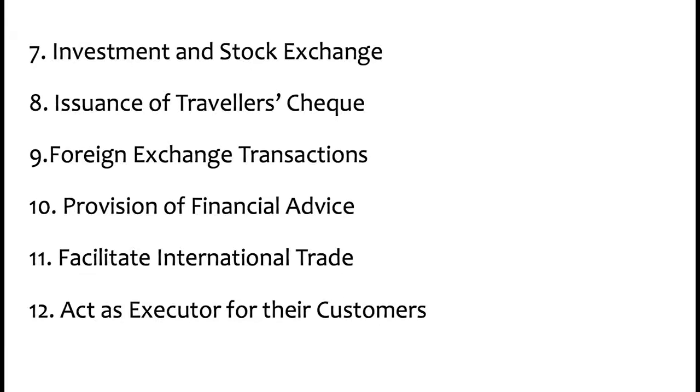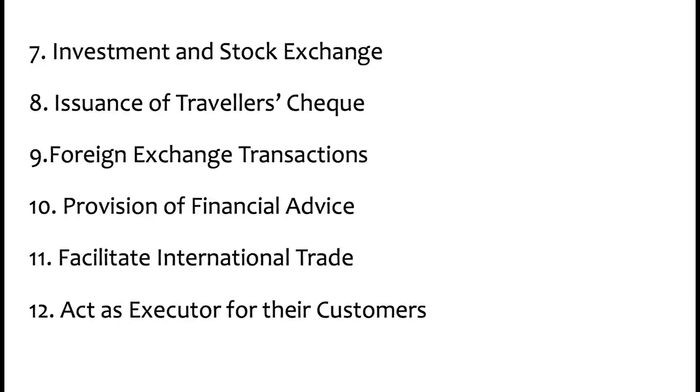Number nine, foreign exchange transactions. They are involved in foreign exchange transactions, providing foreign currencies to their customers — selling foreign currencies. People that are going abroad can go and obtain the currencies of those countries so that when they get there, they use the money to buy whatever they want to buy. Number ten, provision of financial advice. Commercial banks offer financial advice to their customers, advising them on how to manage their finances.